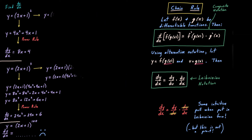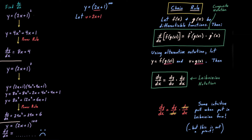So let's deal with the Leibnizian form in solving the seemingly intractable 2x plus 1 to the 100th power. I am raising some variable quantity to the 100th power. Let u stand for that entire variable quantity, 2x plus 1. Then with that choice of u, y is u to the 100th. If u is 2x plus 1, then du over dx — the derivative of u with respect to x — is 2. Likewise, the derivative of y with respect to u, by simple power rule, is 100 times u to the 99th.